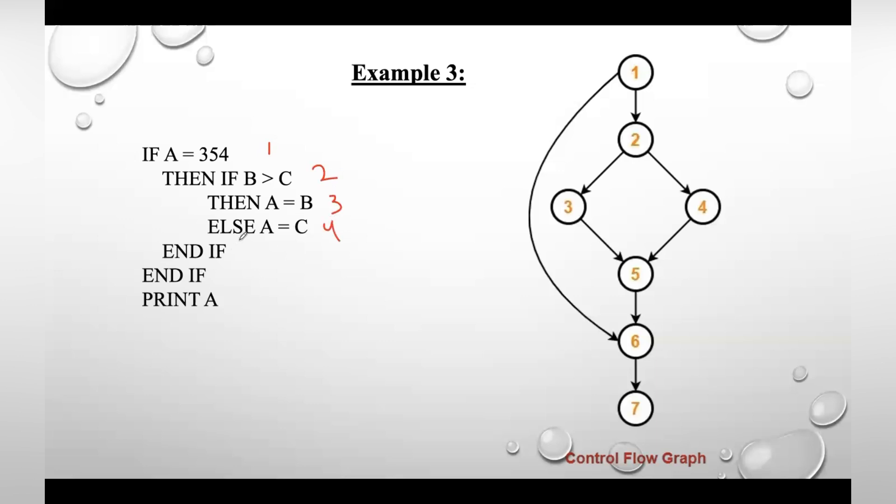If you take start and end, then it becomes nine blocks. For this, first if A value is equal to 354, so if that condition is true then move to this statement. If B value is greater than C, then A equal to B. So here write it as A equal to B. If this value is false, move to this fourth block which is taken as A equal to C.